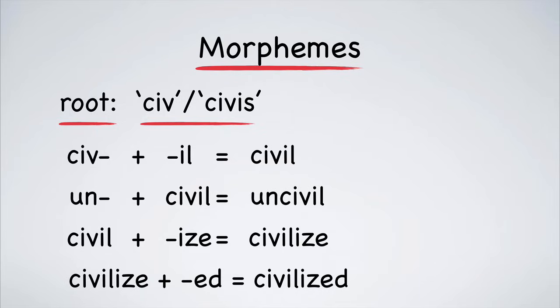Adding the suffix -ed to this creates the word civilized, meaning being in a culturally advanced state. Uncivilized means not being culturally advanced. And it goes on. We could create many more words. The point is that one root can take many affixes, and suffixes can be added to other suffixes to create even more words.